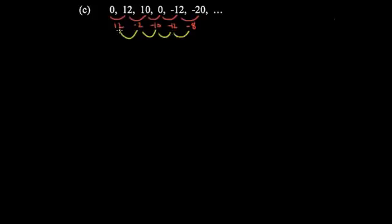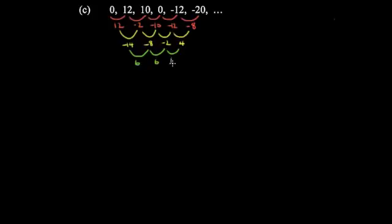The second row would be: subtracting 14, then subtracting 8, then subtracting 2, then adding 4 because it gets less negative. Then we look at the third row of differences: to go from negative 14 to negative 8 you add 6, and here we add 6, and here we add 6.